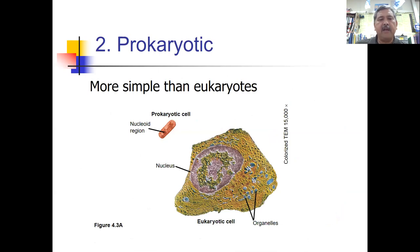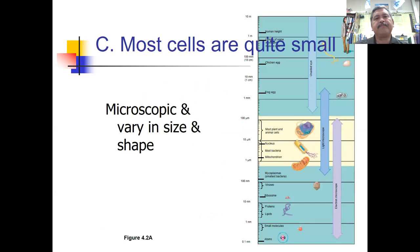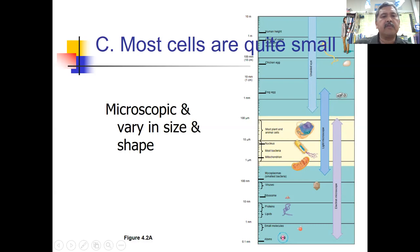Prokaryotic cells, on the other hand, are more simple and generally smaller. They don't have a nucleus, although they do have a region where DNA clumps up — but that DNA is not in a membrane-bound structure. Most plant and animal cells are in the range of 10 to 100 microns, which is 10 to the negative 6 meters. They're really small — visible with a light microscope but too small for the unaided eye. Cells are microscopic, varying in size and shape, but they never get really large.